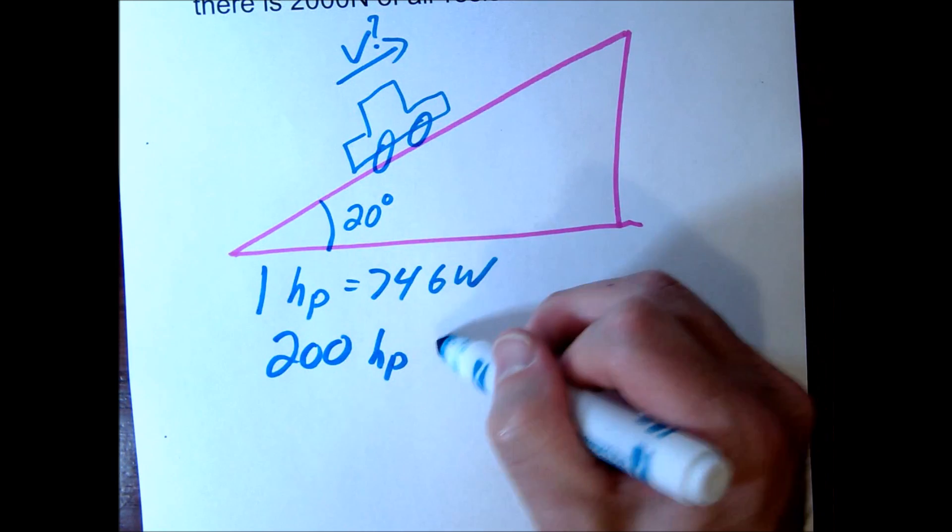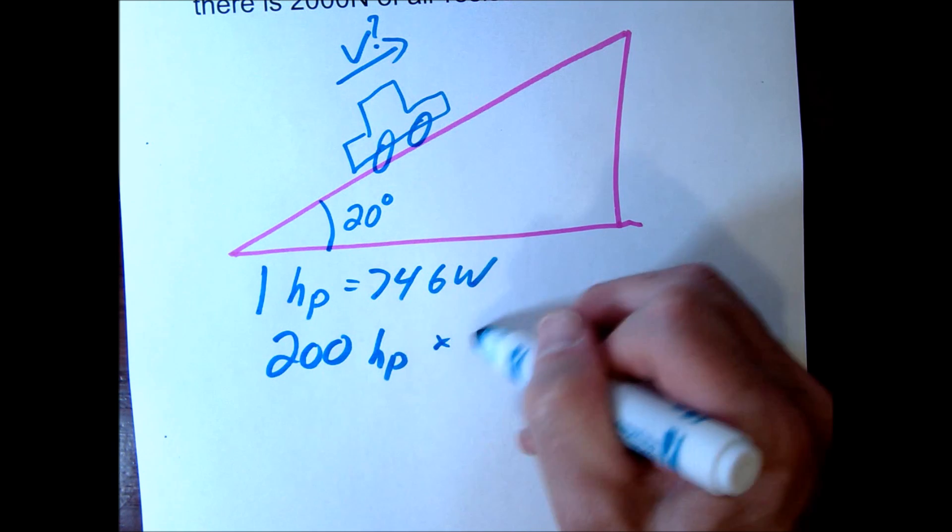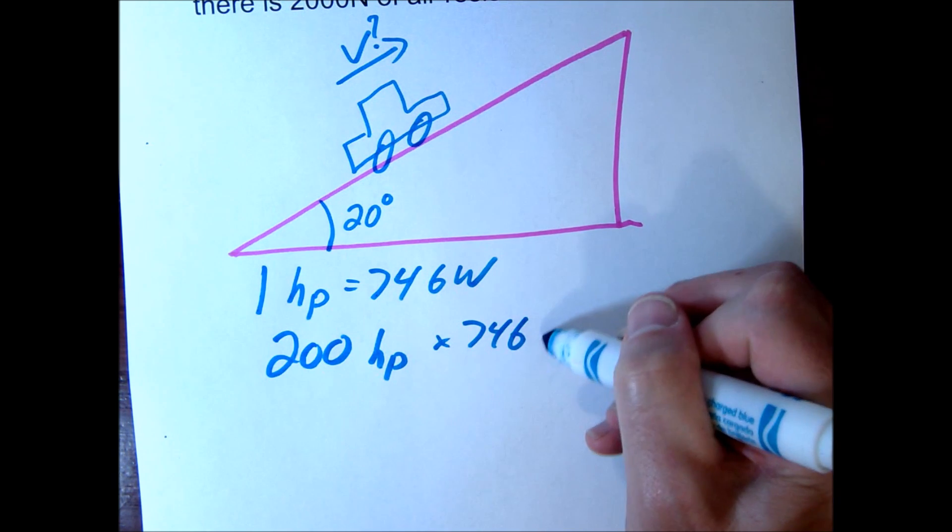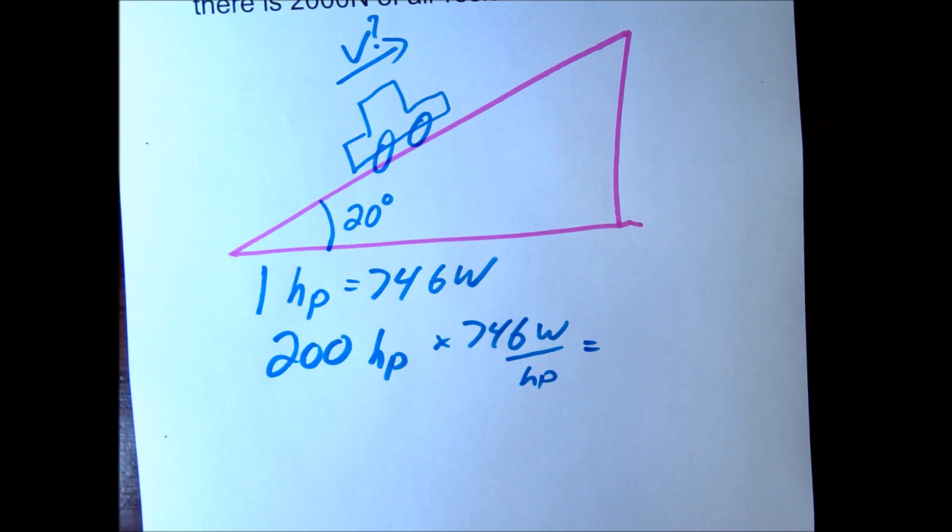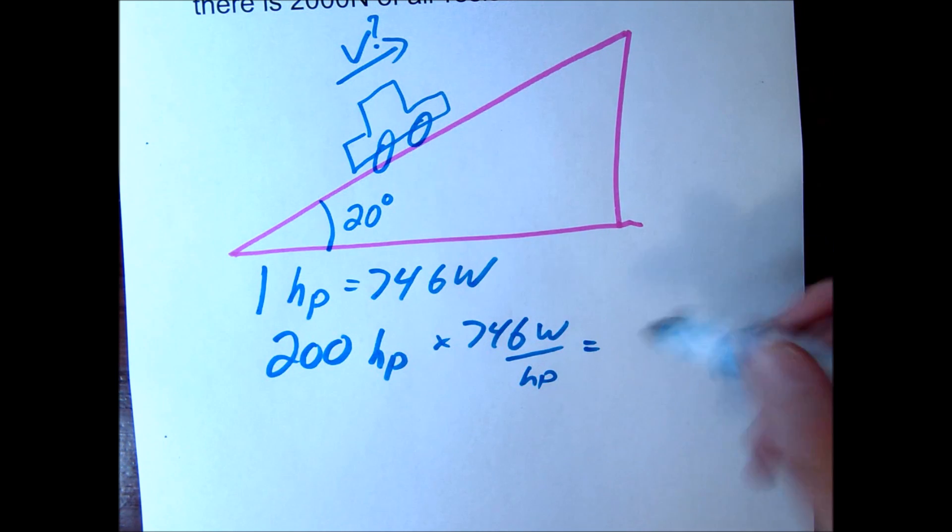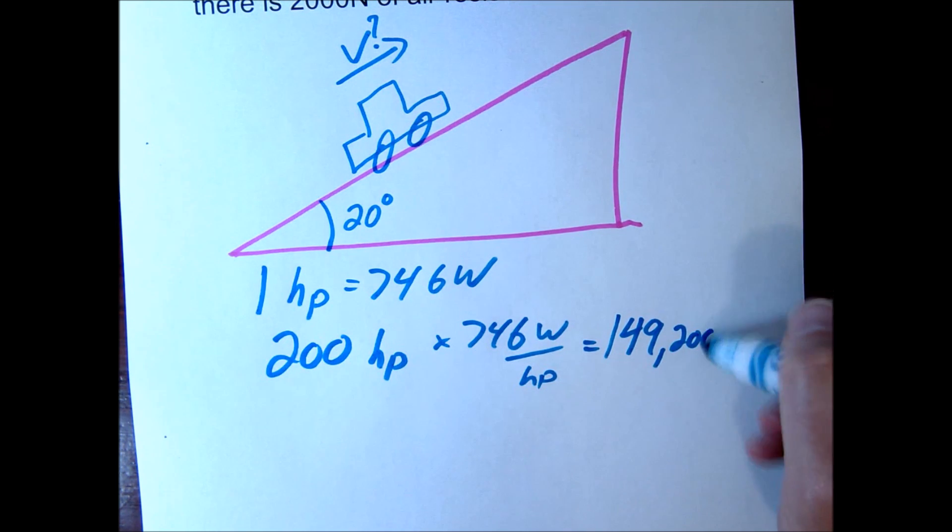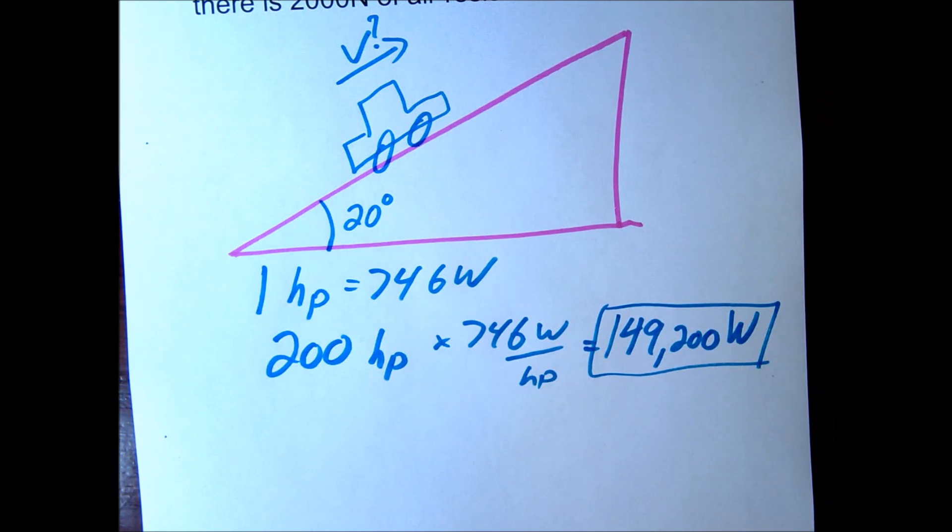that's going to be times 746 watts per horsepower and that's going to give us 149,200 watts. So we're going to use that as our starting point.